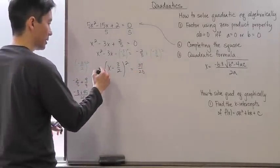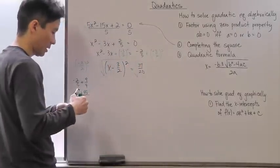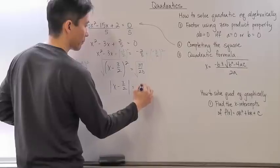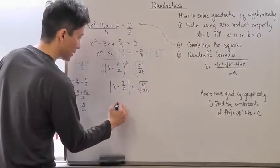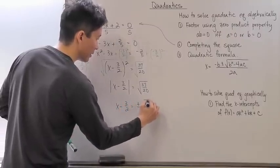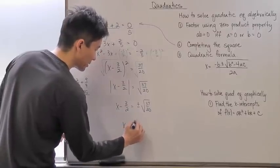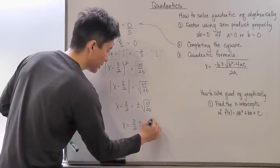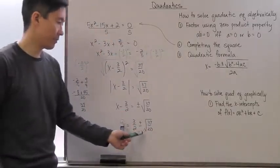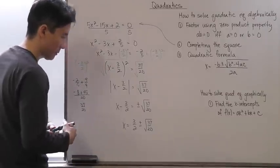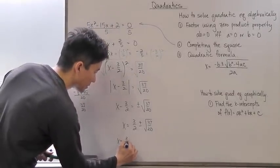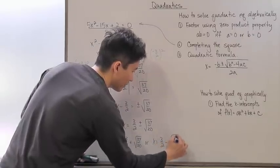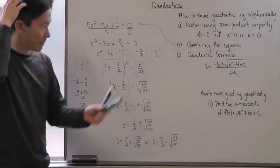Now how do I solve for x? I just take the square root of both sides. By definition this becomes the absolute value of x minus 3/2 equals the square root of 37/20. So x minus 3/2 equals plus or minus the square root of 37/20. Therefore x equals 3/2 plus or minus the square root of 37/20, and you can simplify the radical. Remember this is really two different solutions: x equals 3/2 plus the square root of 37/20, or x equals 3/2 minus the square root of 37/20. That's the process called completing the square.